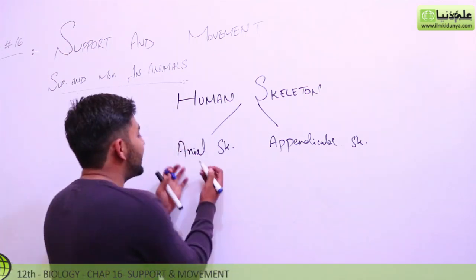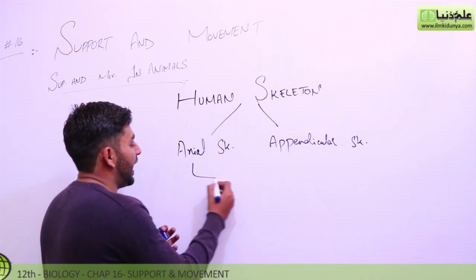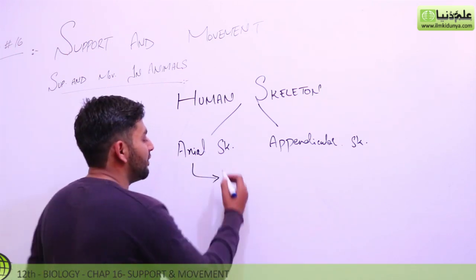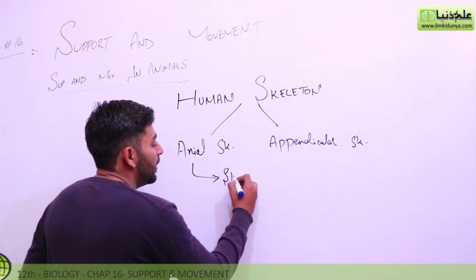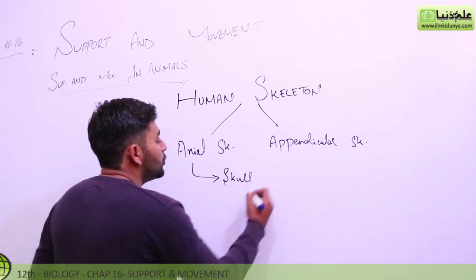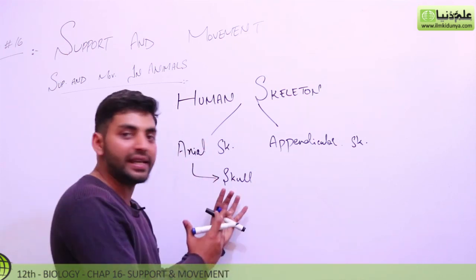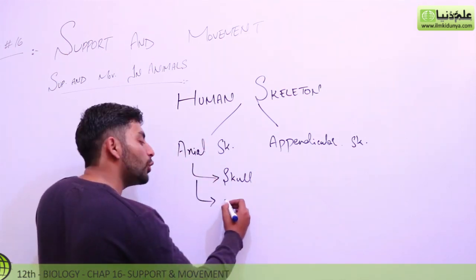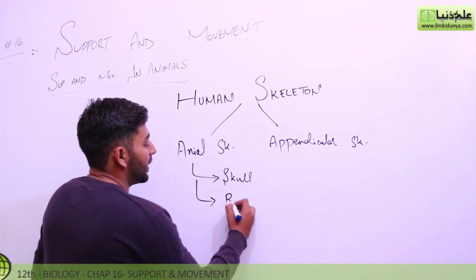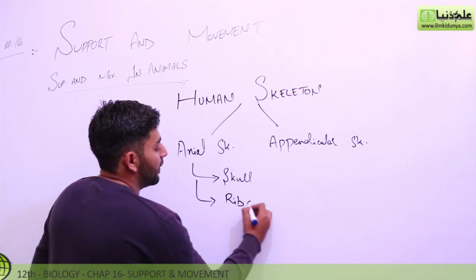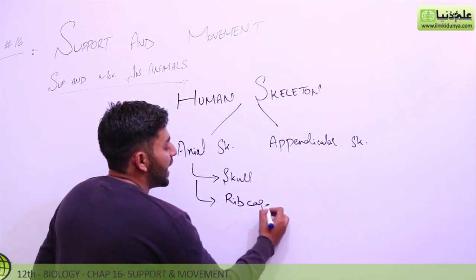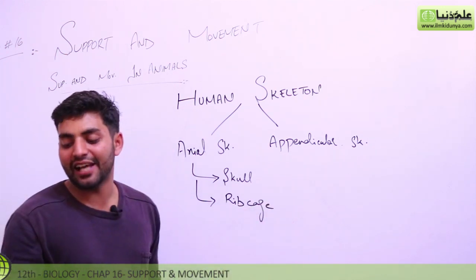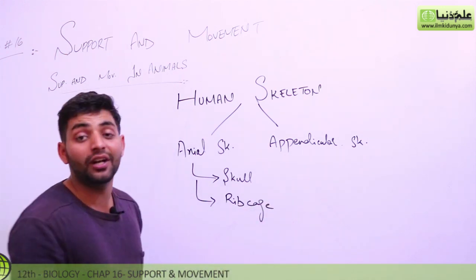First of all, we have a skull. The rib cage and the vertebral column are also key components of the axial skeleton.